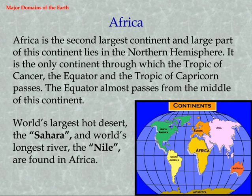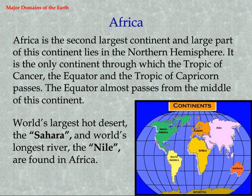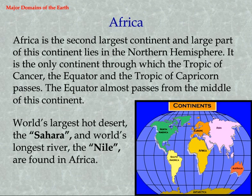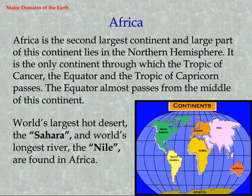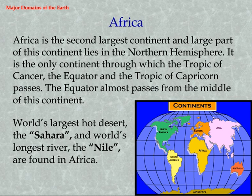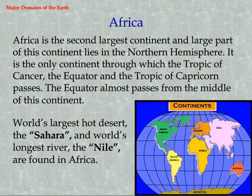Africa is the second largest continent and a large part of this continent lies in the Northern Hemisphere. It is the only continent through which the Tropic of Cancer, the Equator, and the Tropic of Capricorn all pass. The Equator almost passes from the middle of this continent. The world's largest hot desert, the Sahara, and the world's longest river, the Nile, are found in Africa.